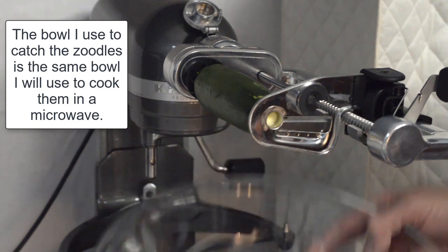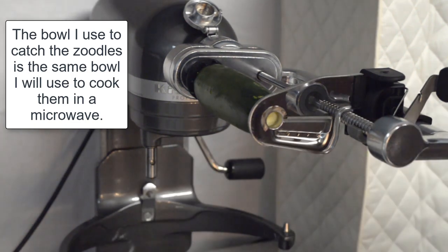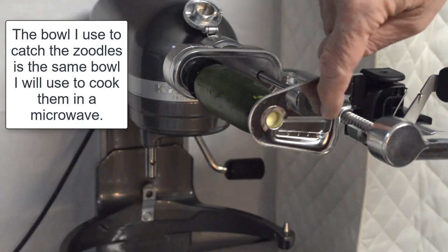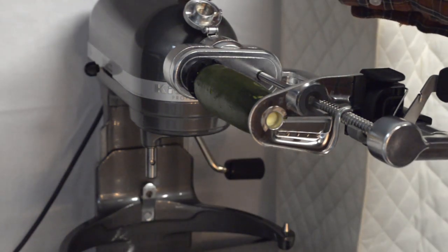Alright, so I've got a bowl underneath the attachment to catch the zoodles. They'll be coming out here. At this point, I'll just turn the mixer on to its lowest setting.